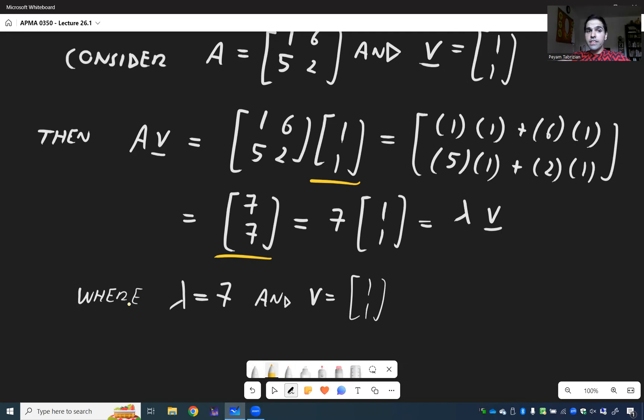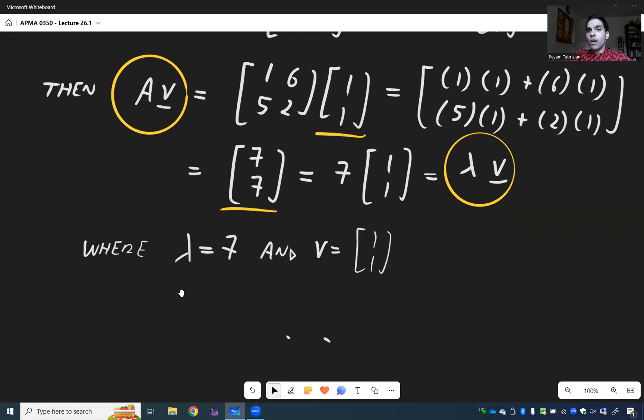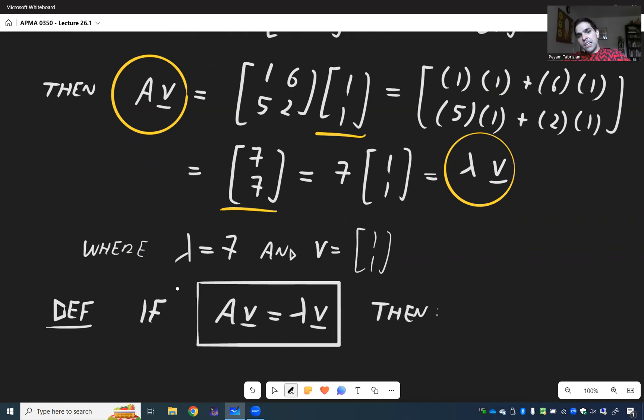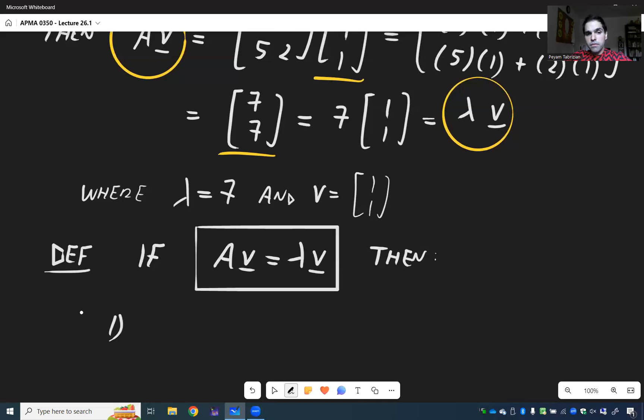And if you have this situation, where you apply A to a vector and you get a multiple of itself, that vector is called an eigenvector, and that multiple is called an eigenvalue. So let me summarize and define. If the output is a multiple of the input, so if AV equals lambda V, then that number lambda is called an eigenvalue of A.